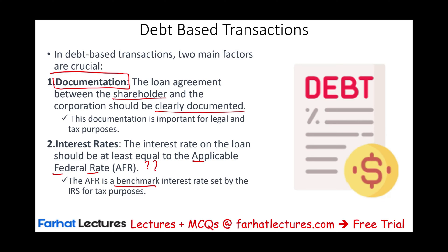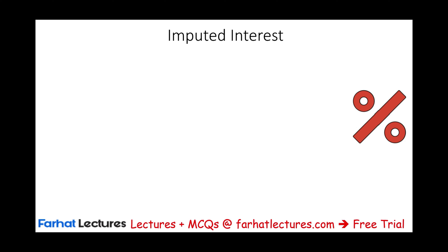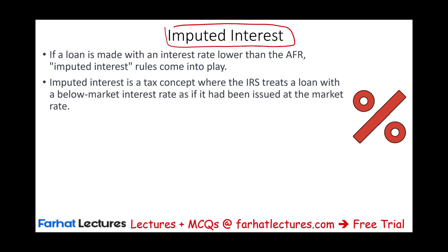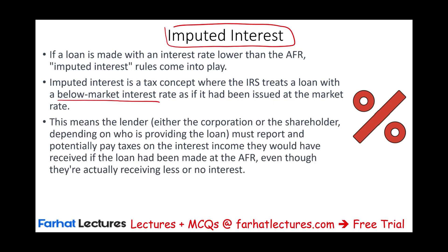We have a full session dedicated to computing imputed interest for the CPA exam. If a loan is made with an interest rate lower than the AFR, then we have something called imputed interest. Imputed interest is a tax concept where the IRS treats a loan with a below-market interest rate. You have to bring it up to the AFR — compute the difference. This means the lender must report and potentially pay taxes on interest income, even if they are actually receiving no interest or less than the AFR amount.